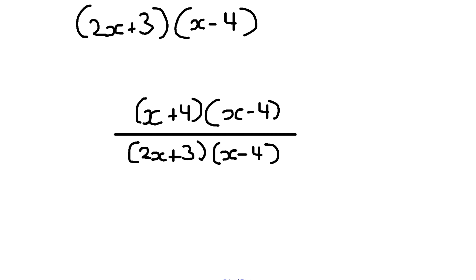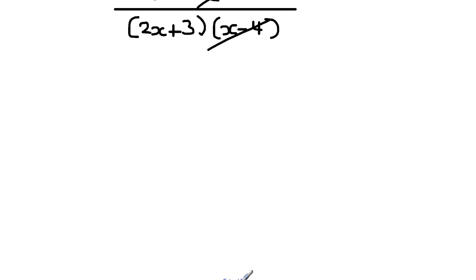I'm going to simplify it further by cancelling out x minus 4 from the numerator and the denominator. Therefore our answer should be x plus 4 over 2x plus 3.